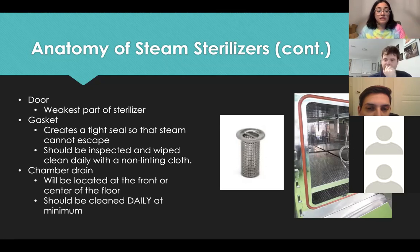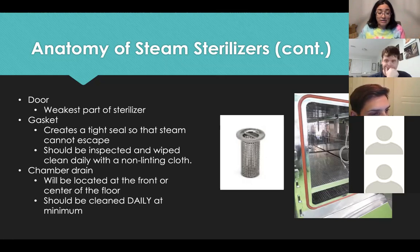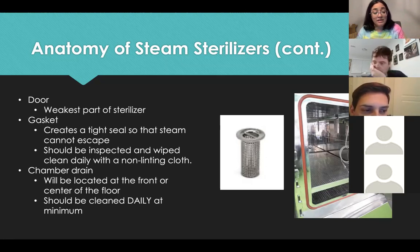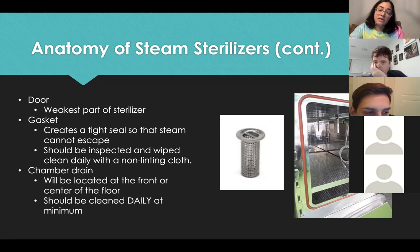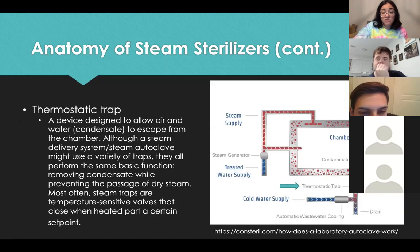The gasket is the rubber seal that forms a tight seal in the sterilizer so steam doesn't escape. If the gasket is damaged, it can interfere with sterilization cycles — so gaskets must be inspected daily and cleaned with a non-linting cloth. The chamber drain is located toward the front or center of the floor and must be cleaned daily; if it gets clogged, it can cause major issues for sterilization.